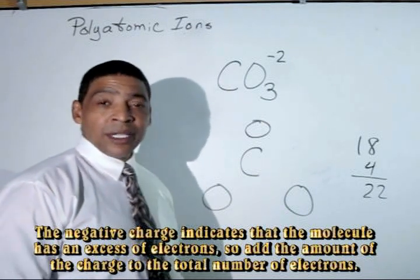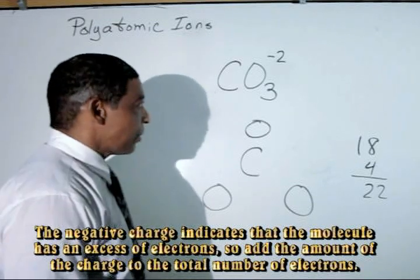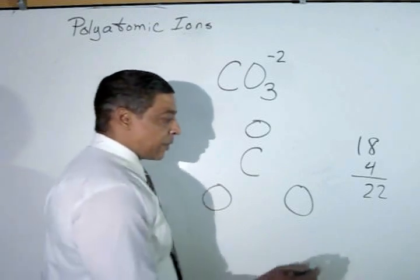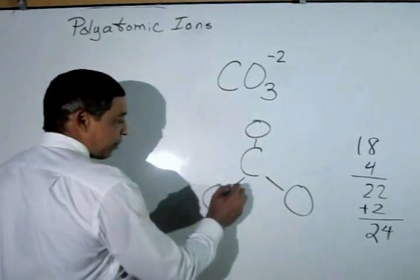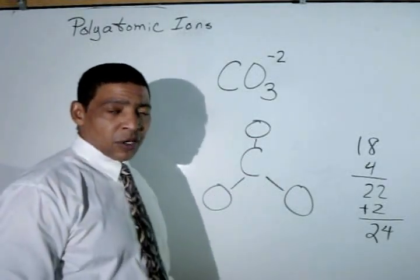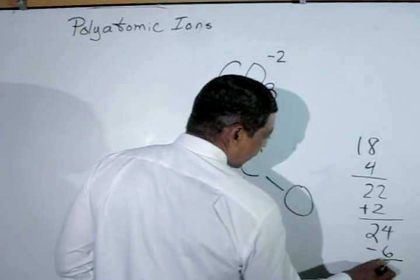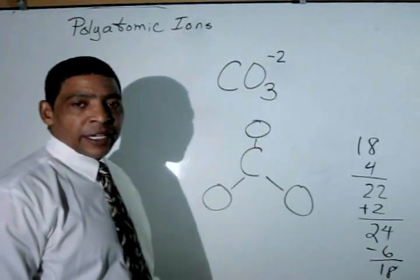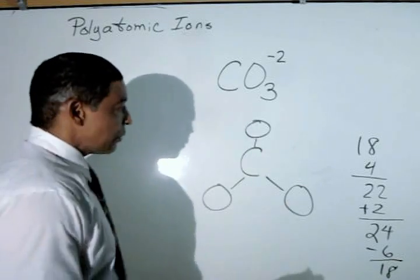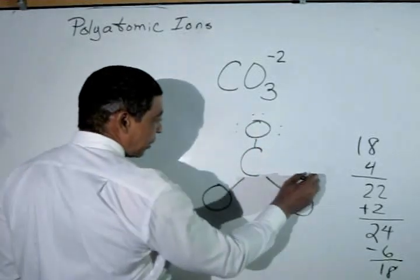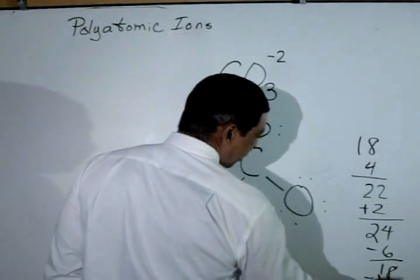However, the charge of the carbonate anion is a minus two, which means we must add two electrons to our total, giving twenty-four. Connecting each atom to the central atom via a covalent bond will consume six electrons, leaving eighteen electrons. The eighteen electrons will now be distributed evenly amongst the perimeter atoms, so each perimeter oxygen will receive six electrons, consuming the eighteen and leaving zero.